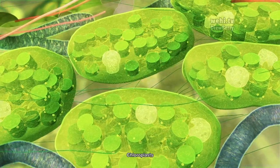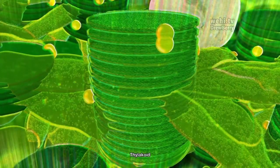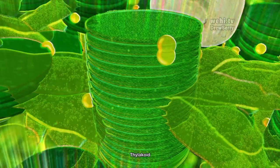Resembling stacks of coins inside the chloroplasts, thylakoid membranes are where photosynthesis light-dependent reactions occur.